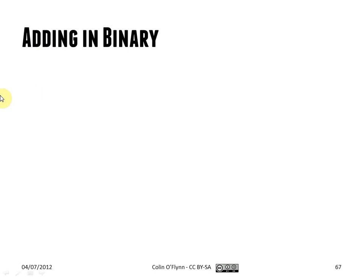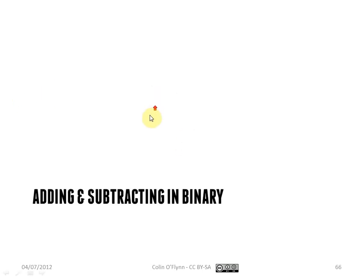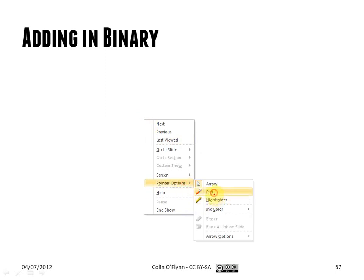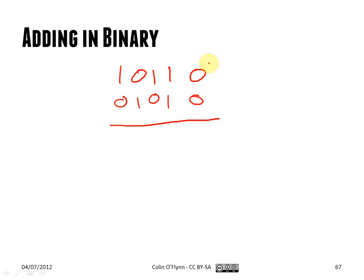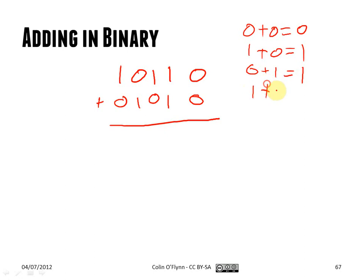I'll give you an example of adding in binary. If we have two numbers, say 1,0,1,1,0 and 0,1,0,1,0 — in a similar way to adding in decimal, you just add each column in sequence. In binary, 0 plus 0 is 0, 1 plus 0 is 1, 0 plus 1 is 1, and 1 plus 1 is 0 with a carry of 1. So you can just use those rules to complete the whole sequence.